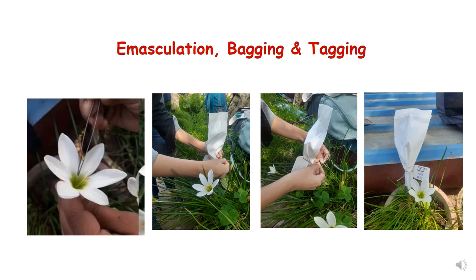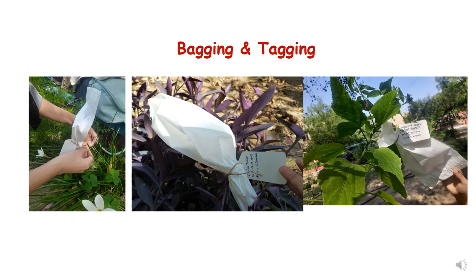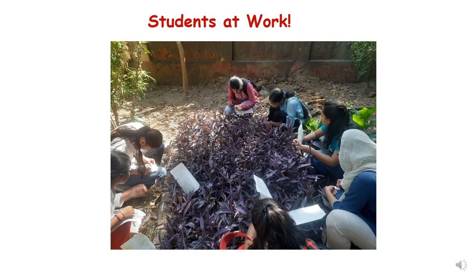Here you can see the whole process of plant improvement step by step. In the first picture, emasculation is taking place where anthers are being removed. In the second picture, bagging is taking place. In the third picture, tagging is shown. There are also pictures of bagging and tagging on different plants like lily, rose, and hibiscus, and students performing these experiments in the field.